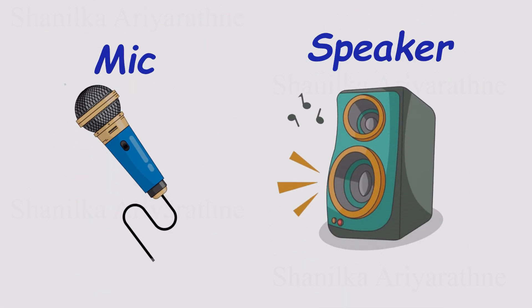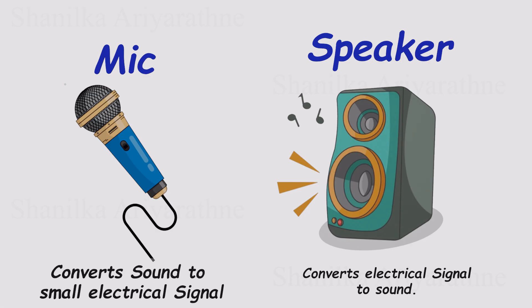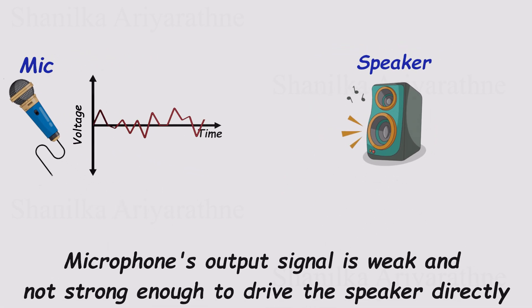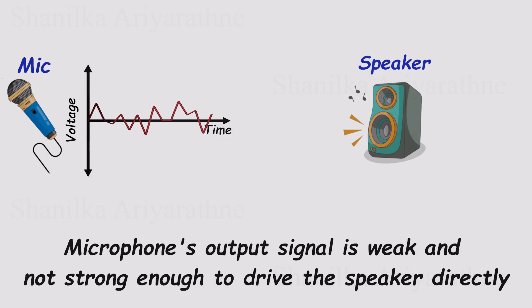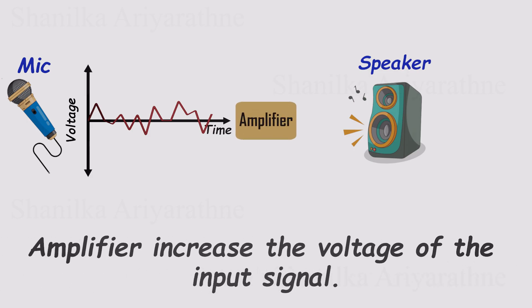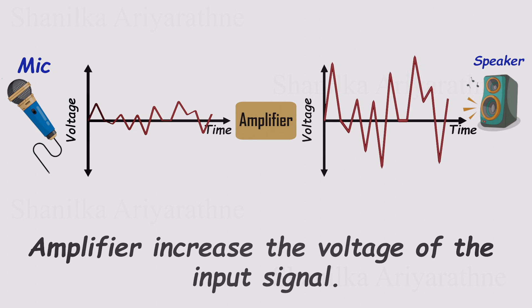Take a microphone and a speaker, for example. The mic converts your voice into an electrical signal, but that signal is far too weak to power a speaker on its own. That's where an amplifier comes in. It strengthens the signal so it becomes usable.